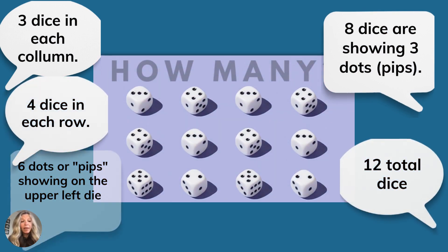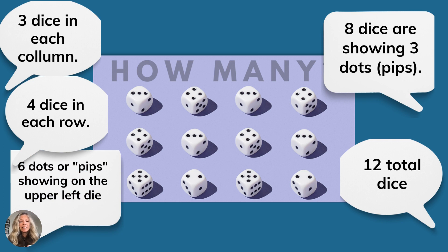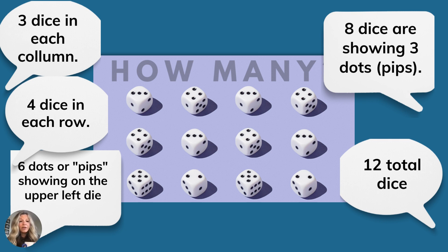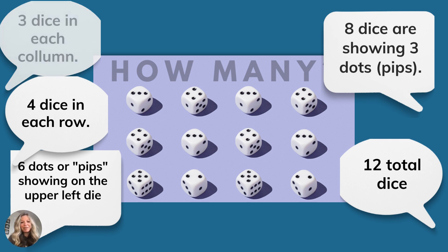Here are some of what my third graders came up with: there are three dice in each column, four dice in each row, six dots or pips showing in the upper left die, eight dice are showing three pips, and there are 12 total dice. There's just so many different things kids can notice. During a teacher training I did the other day, a teacher noticed that the tops of the two dice on the top right made seven — and if you group them by twos all the way down, it's seven, seven, seven, seven, seven, seven. I had never noticed that pattern before. It's just so much great math thinking and noticing. I love this routine.